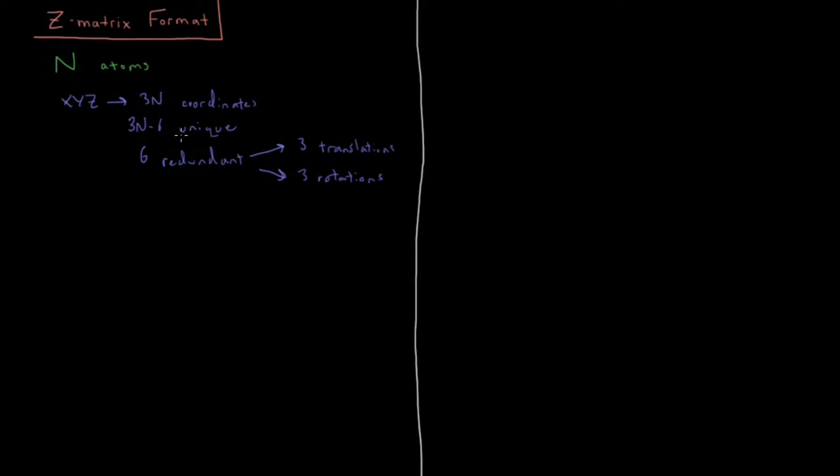So we're just interested in eliminating this redundant information, and there's another format we can use for that, and that is called a Z matrix. A Z matrix, as noted, has 3N minus 6 internal degrees of freedom, and 0 are redundant.